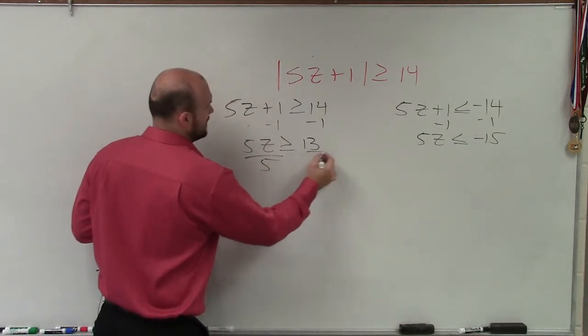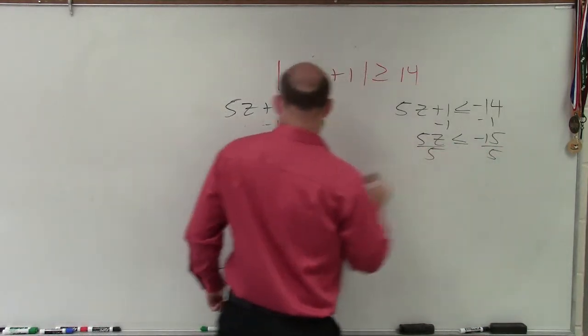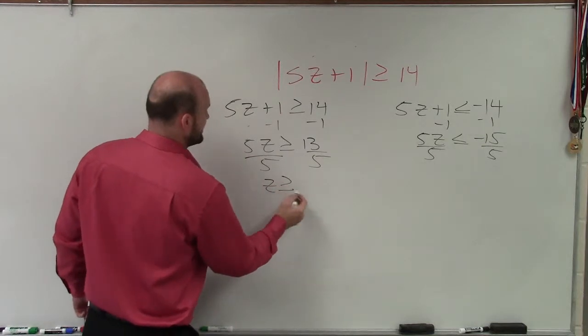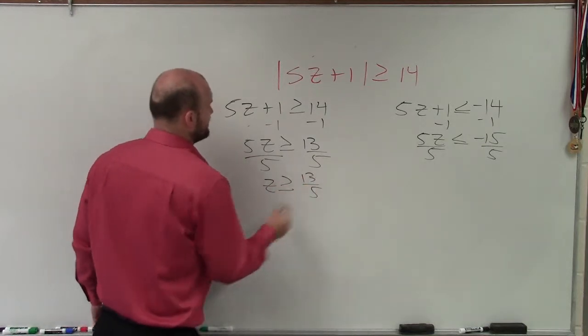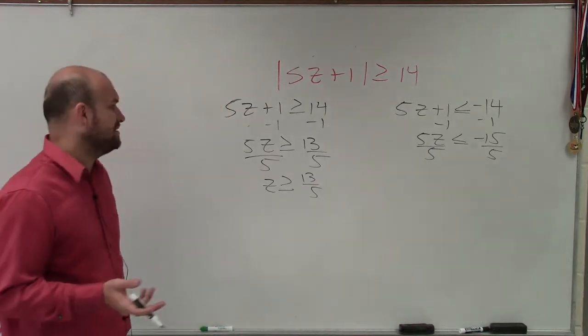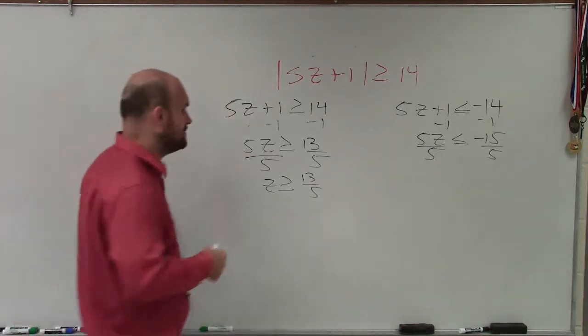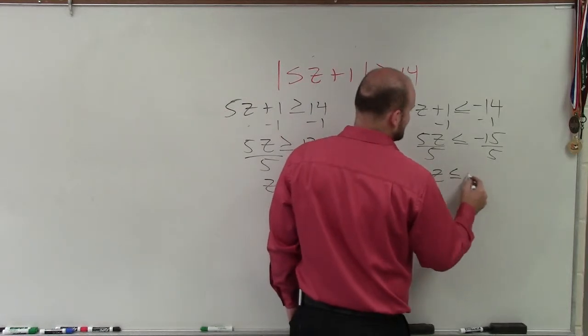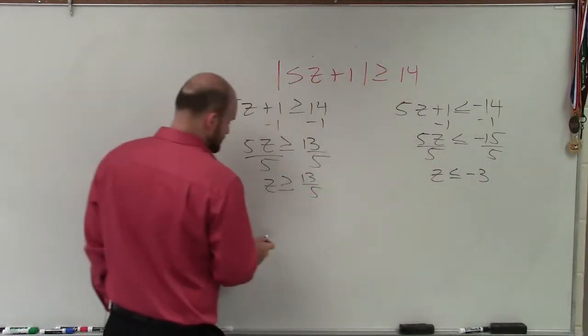Divide by 5 on both sides. And I have z is greater than or equal to 13 over 5, which is almost going to be 3. It's going to be 2 and some decimal. And here, this would be z is less than or equal to negative 3.